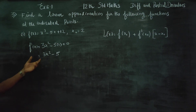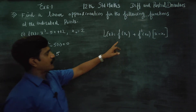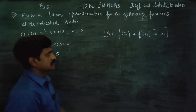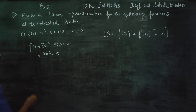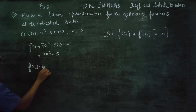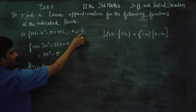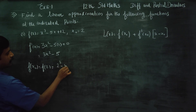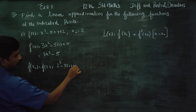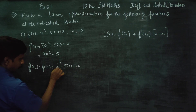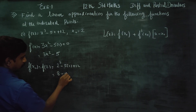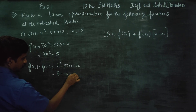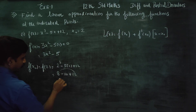After finding the derivative, I want f(x₀) as well as f'(x₀). Since x₀ = 2, we find f(2): substituting gives 2³ - 5(2) + 12, which equals 8 - 10 + 12 = 20 - 10 = 10. So f(x₀) = 10.